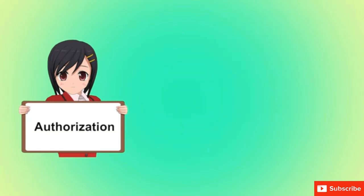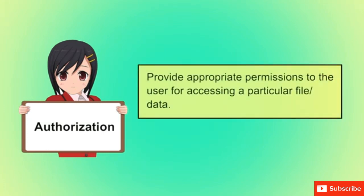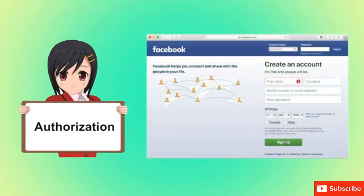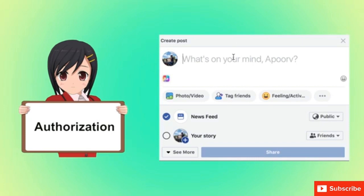Authorization is the process of ensuring that an employee has enough access rights to particular information so that he can perform intended actions. For example, once you enter valid credentials to your Facebook account, you are authorized to perform all that you have permission to do — like post pictures, videos, statuses, etc.